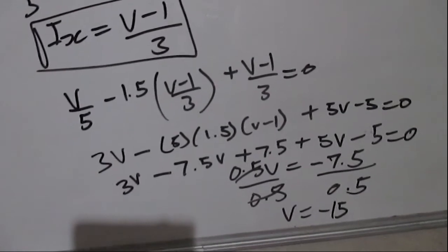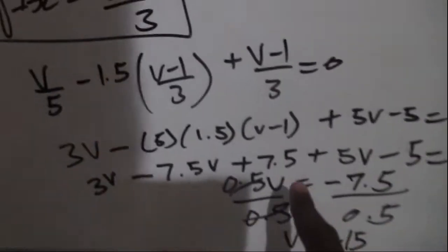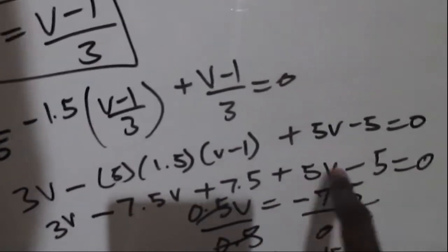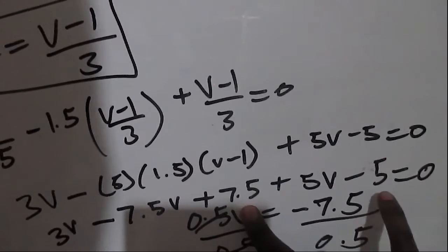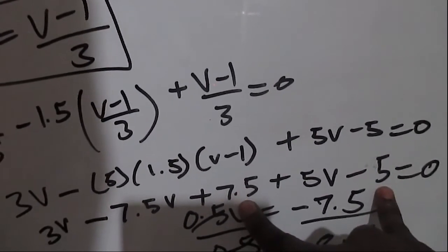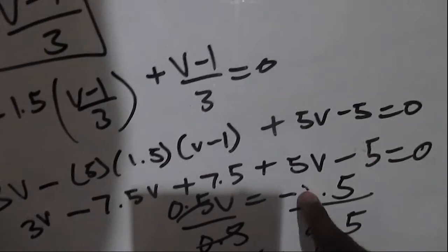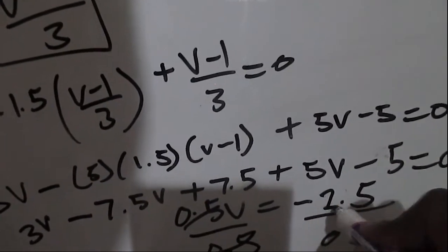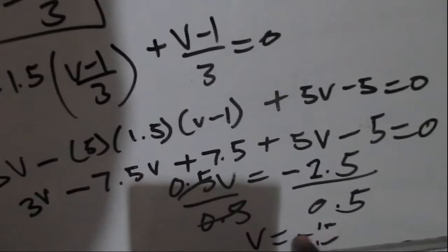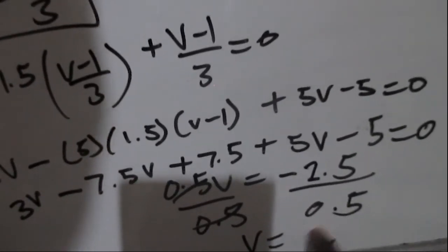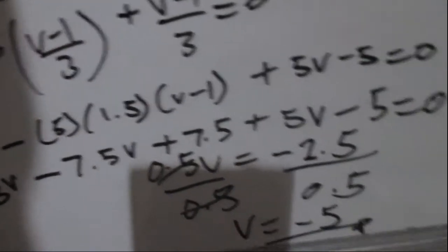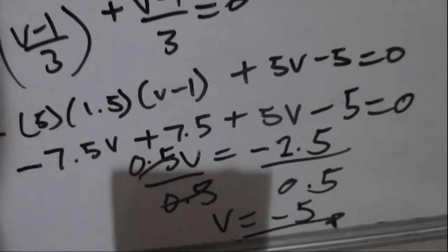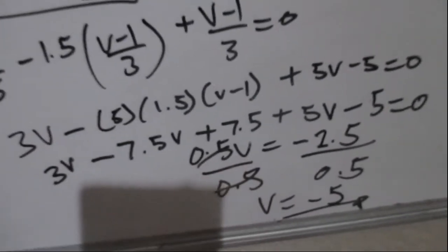Correcting a slight math error: 7.5 minus 5 is 2.5, taking it to the other side gives −2.5, and −2.5 divided by 0.5 gives V = −5 volts. So we now have V = −5 V and proceed to find Io.